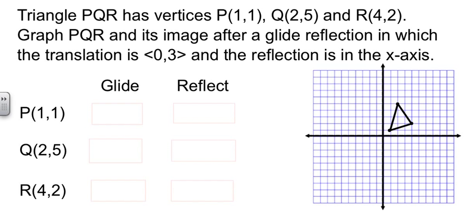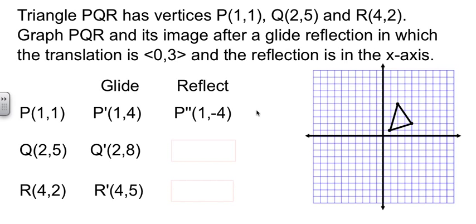Now, our job is to do a glide reflection with a translation vector of 0, 3 and then a reflection in the x-axis. Well, first we do the glide. So we're going to take each point and glide up 3 because that's what the vector says, move it up 3, so add 3 to the y's and then reflect those points in the x-axis. Well, if we reflect in the x-axis that means the y changes sign. We're 4 away from the x-axis so we need to go 4 away. We're 8 away so we need to go 8 away. And then 5 away so 5 away.